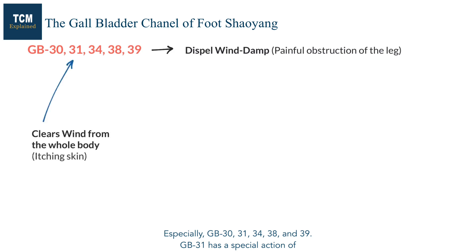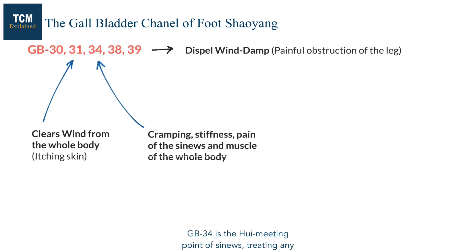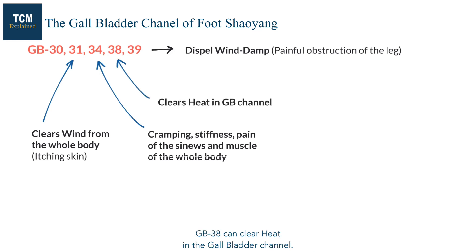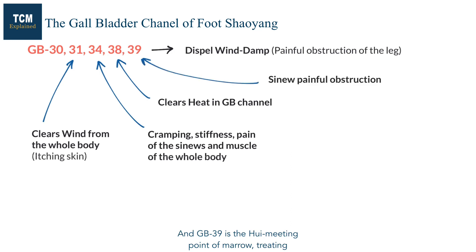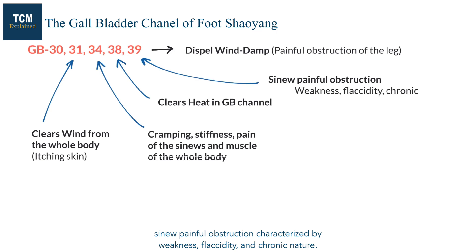GB31 has a special action of clearing wind from the whole body, treating itching skin. GB34 is the hui meeting point of sinews, treating any cramping, stiffness, and pain of the sinews and muscles of the whole body. GB38 can clear heat in the gallbladder channel. GB39 is the hui meeting point of marrow, treating sinew painful obstruction characterized by weakness, flaccidity, and chronic nature.